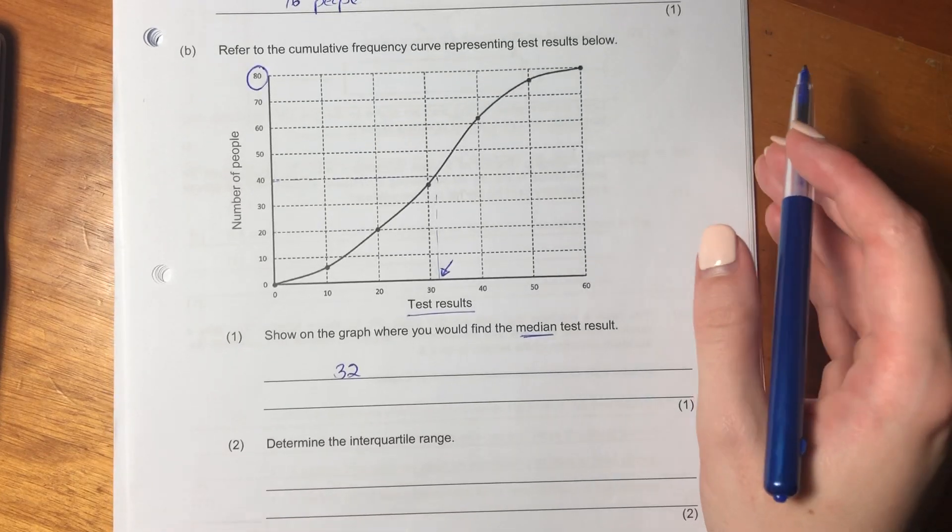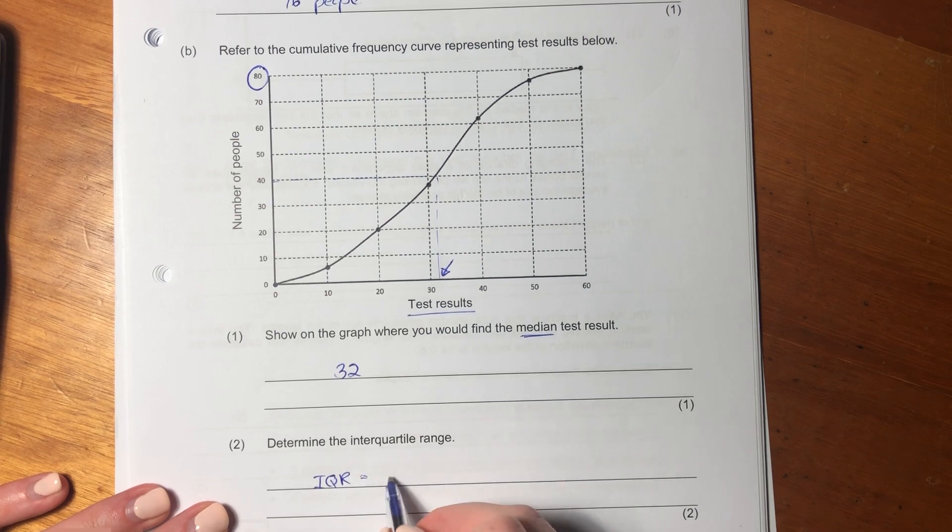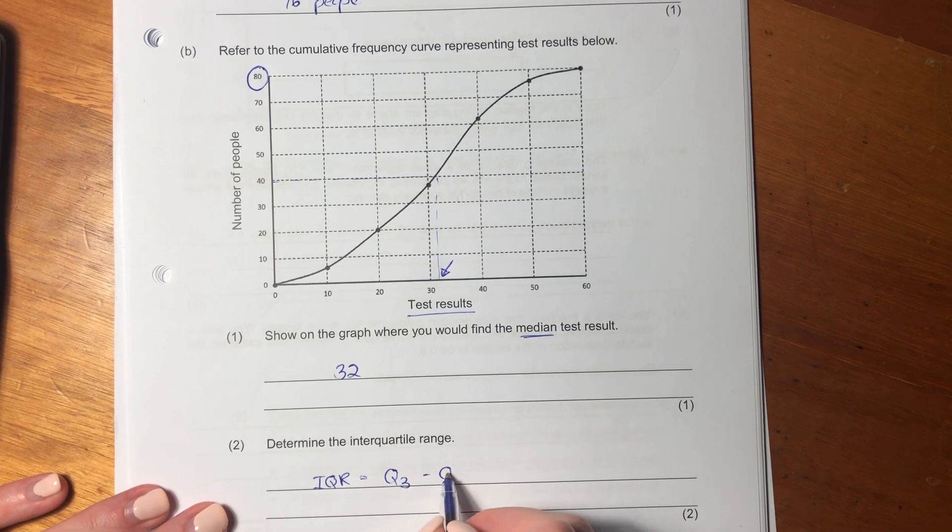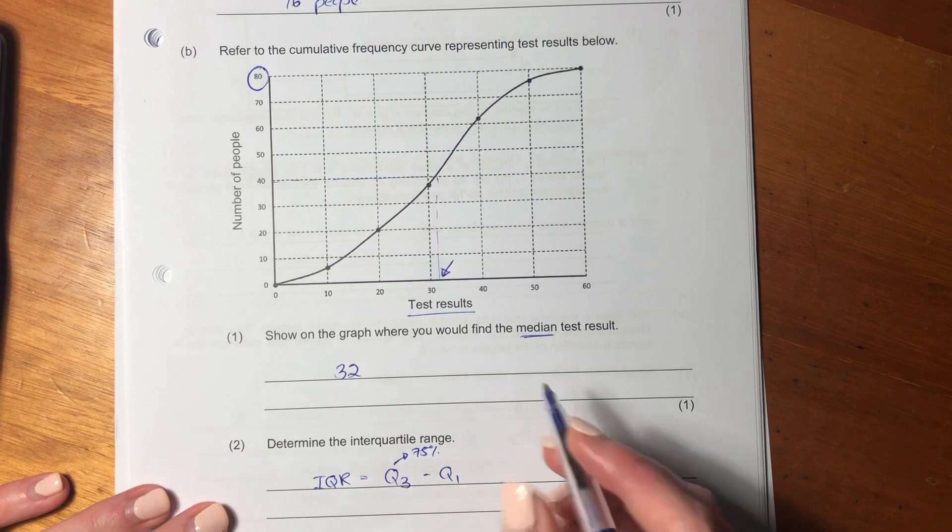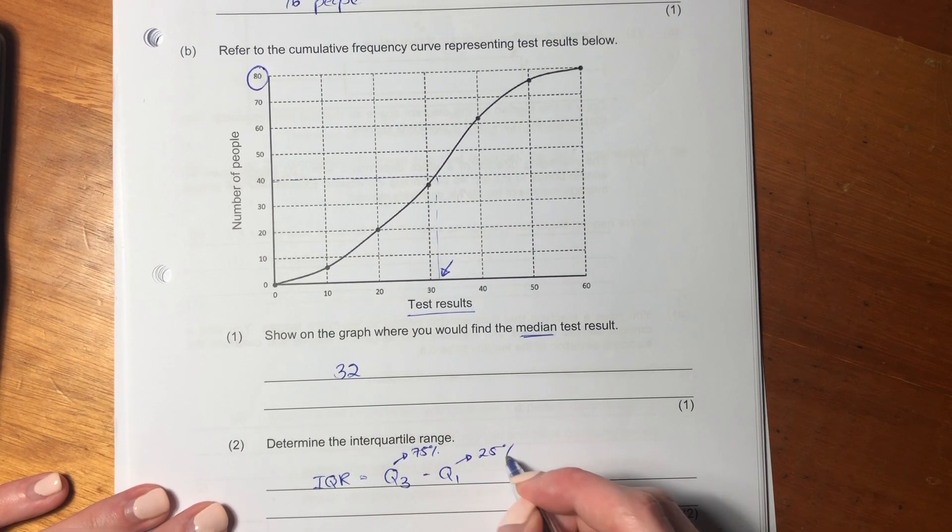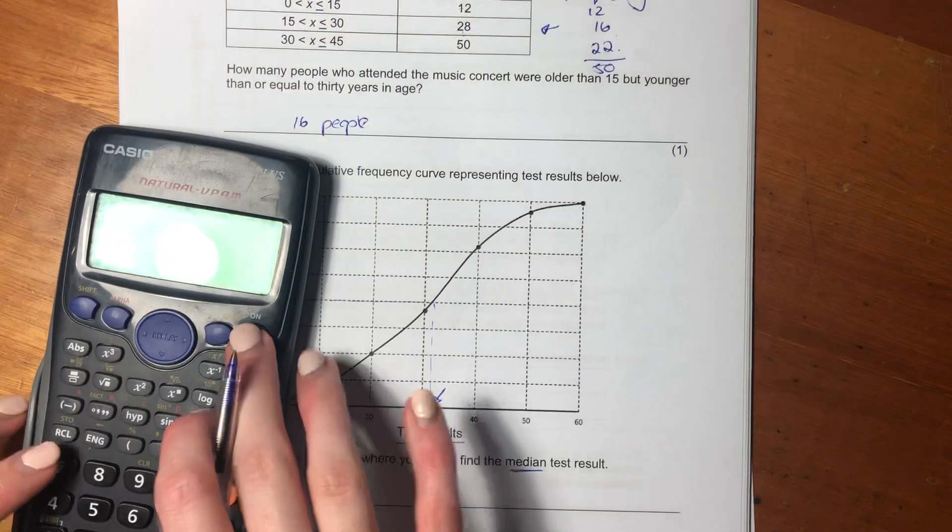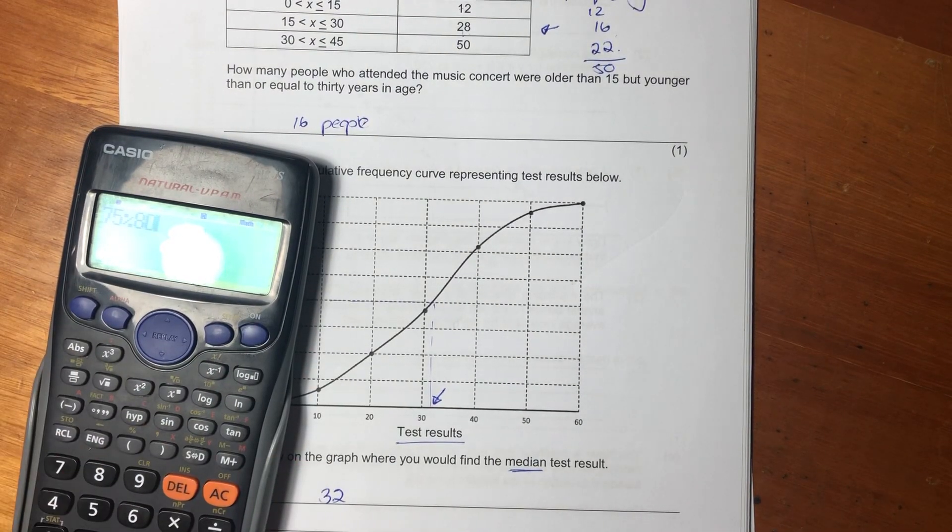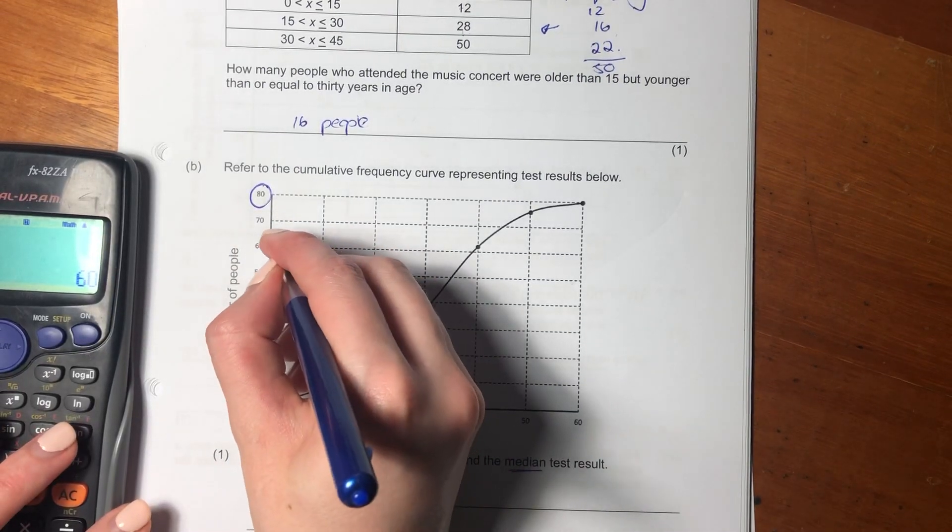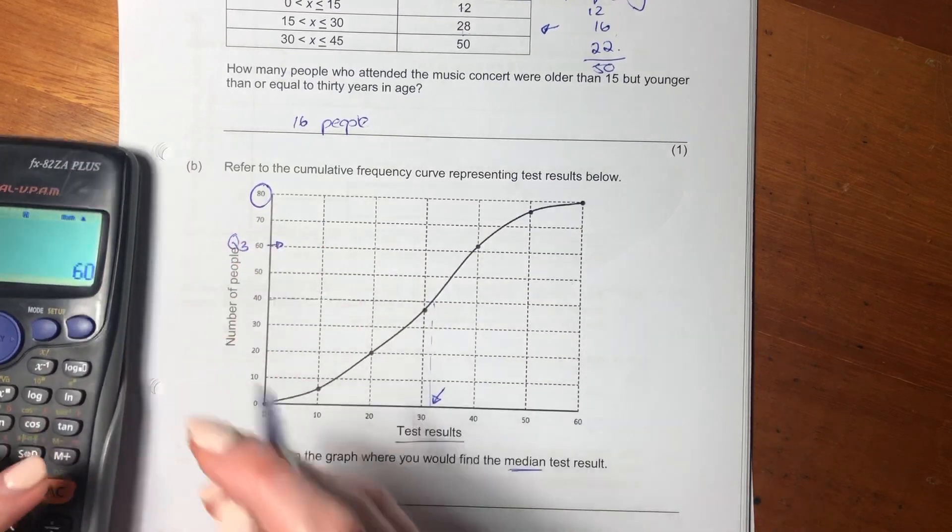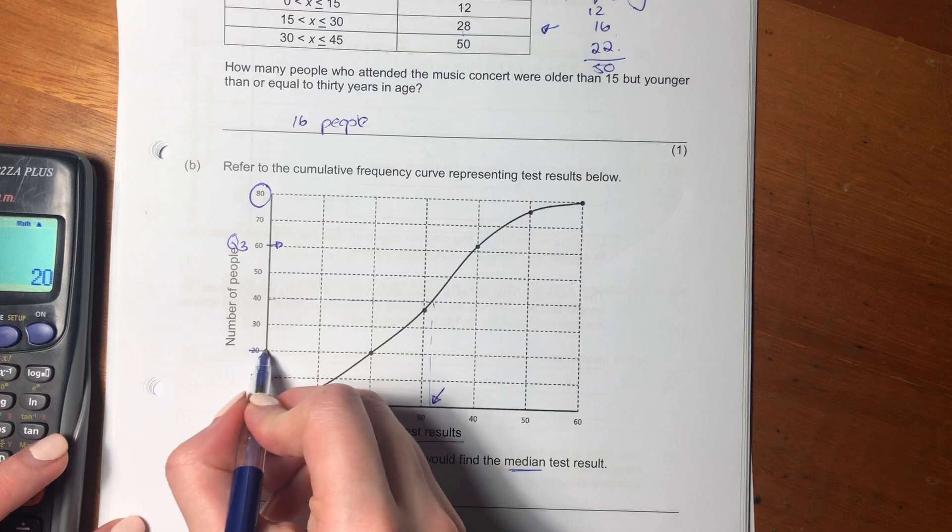Then it says determine the interquartile range. Now, interquartile range equals Q3 minus Q1. Q3 is 75% the way through the distribution, and Q1 is 25%. What is 75% times 80? So this is going to be Q3. What is 25% of 80? It's going to be 20.